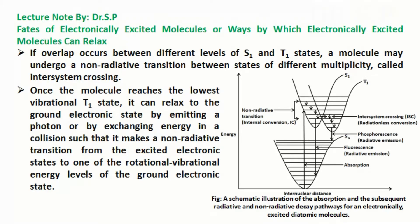Once the molecule reaches the lowest vibrational T1 state, it can relax to the ground electronic state by emitting a photon or by exchanging energy in a collision such that it makes a non-radiative transition from the excited electronic states to one of the rotational vibrational energy levels of the ground electronic state.